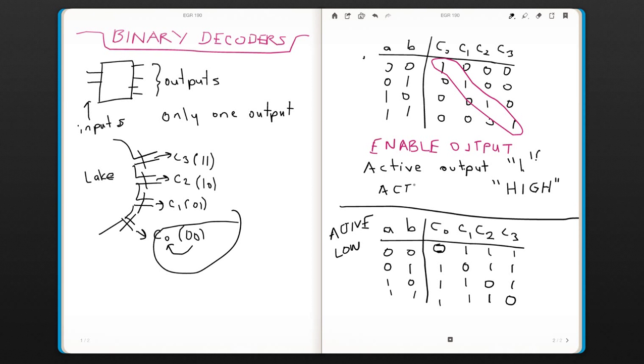And again, this one is an active high where your output is selected by setting it to 1, and the other one is by setting it to 0.